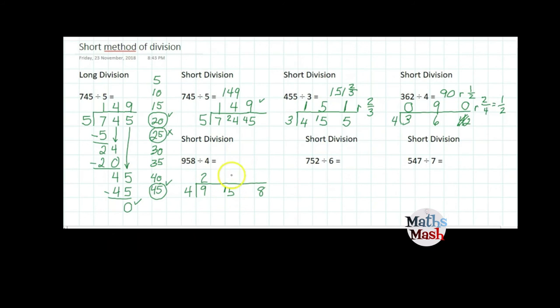How many sets of 4 in 15? That's 3 with 3 left over. And how many sets of 4 in 38? That's 9 with 2 left over. So my answer is going to be 239 remainder 2 quarters.